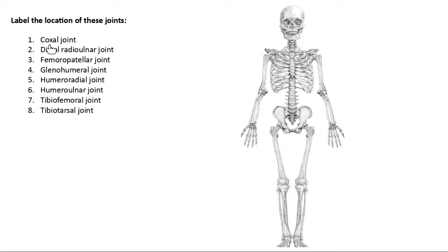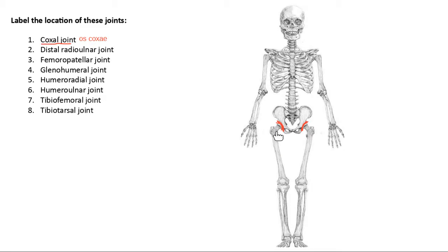The normal person name for the coxal joint is the hip joint. It gets its name because the bones of the hip together are called the os coxae — made of the ilium where you put your hands, the ischium you sit on, and the pubis in the front. The coxal joint is where the os coxae articulates with the femur, the biggest bone in the body.